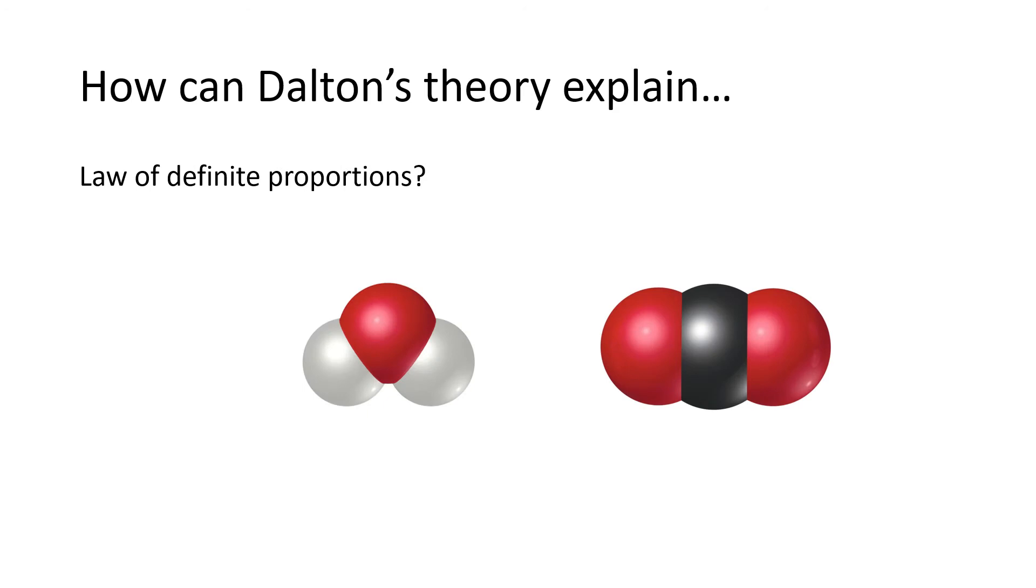The law of definite proportions is probably much easier to understand from an atomic perspective than it is from the mass perspective. The law of definite proportions says basically that the mass ratio of two elements in a compound is always the same, but Dalton's atomic theory says that when a substance forms a compound it always has the same ratio of atoms in it. So these two statements become basically equivalent statements.